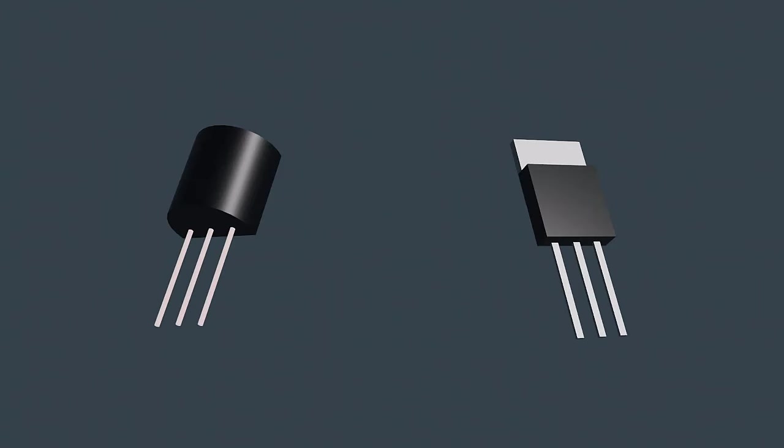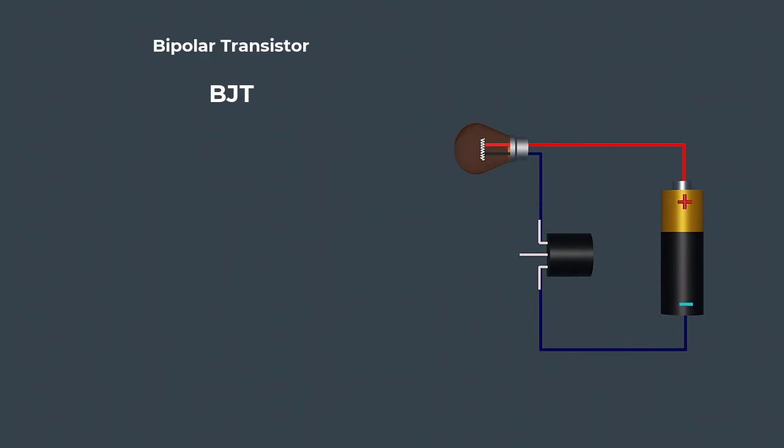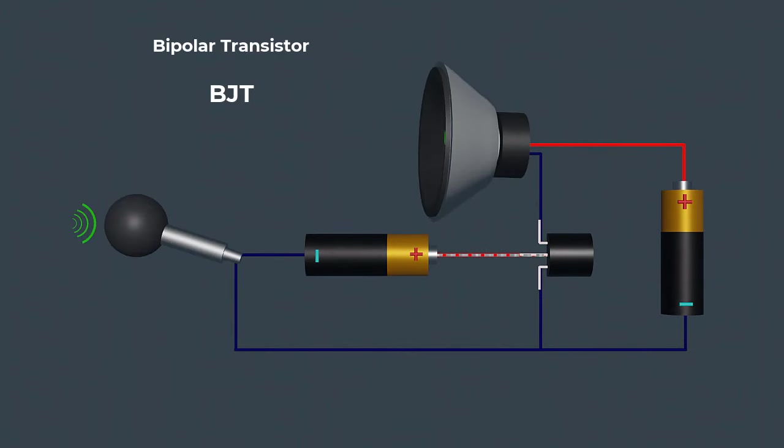There are two main types of transistors: bipolar junction transistors and field effect transistors. We will explore how a bipolar transistor works as a switch and amplifier.